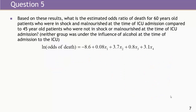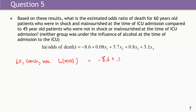Next I asked you to compare two groups who differed on several predictors: 60-year-old patients who were in shock and malnourished at the time of ICU admission versus 45-year-old patients who were not in shock nor malnourished, and neither group was under the influence of alcohol. For the first group, the log odds of death equals negative 8.6 plus 0.08 times 60, plus 3.7 times 1 for shock, plus 0.8 times 1 for malnutrition. Doing the math, this comes out to 0.7.